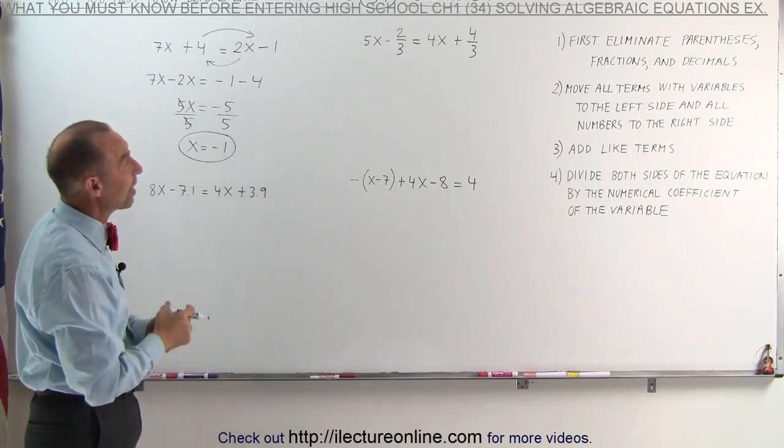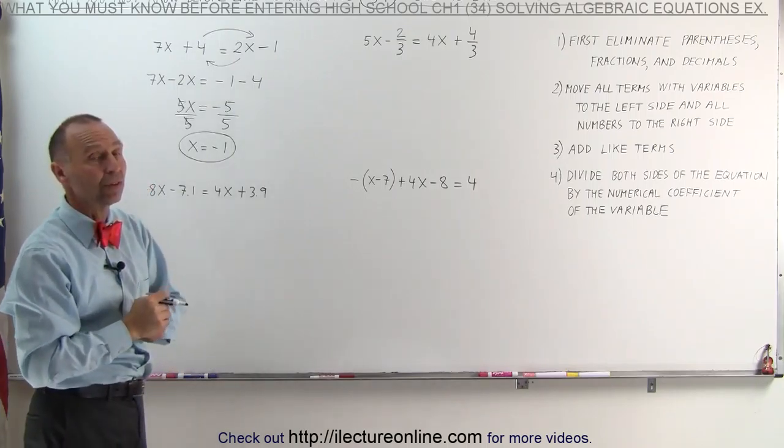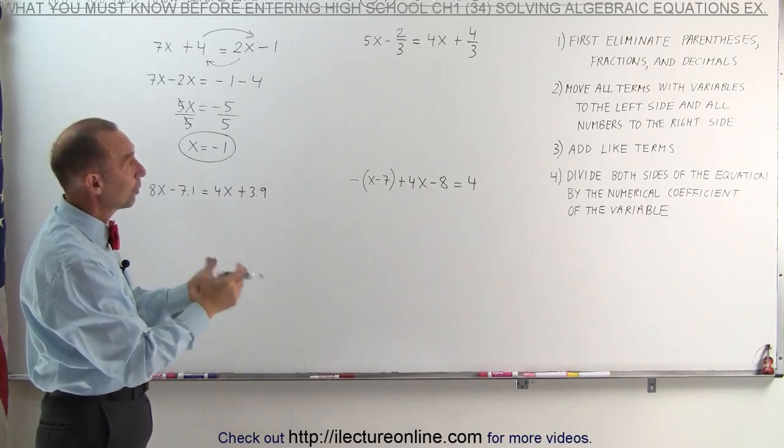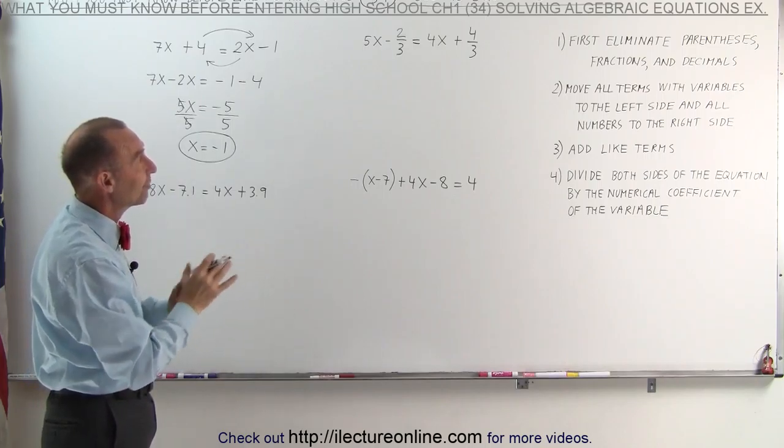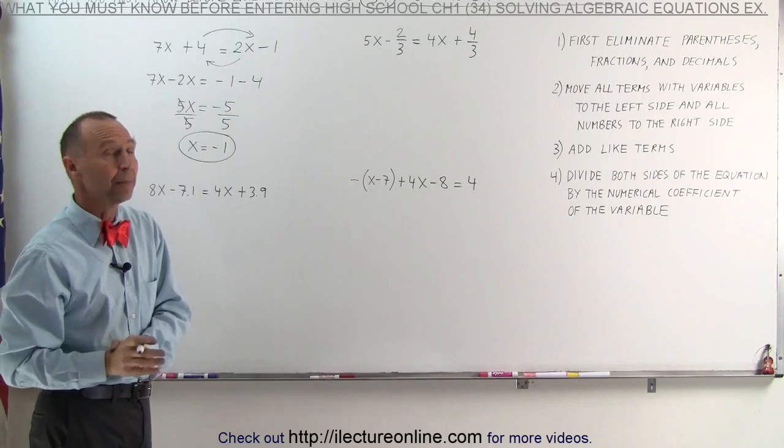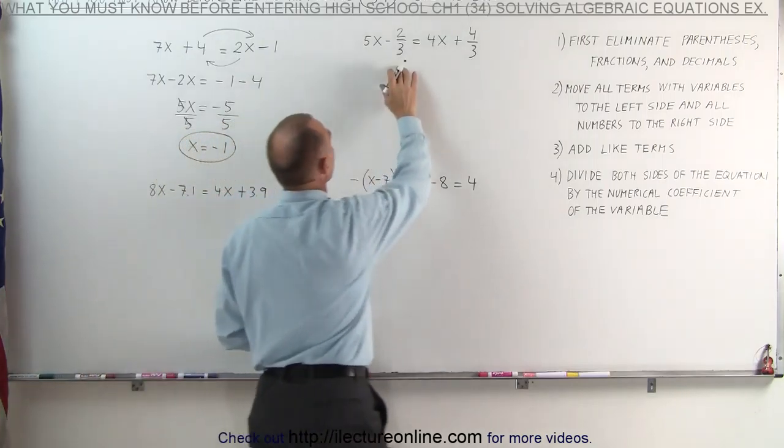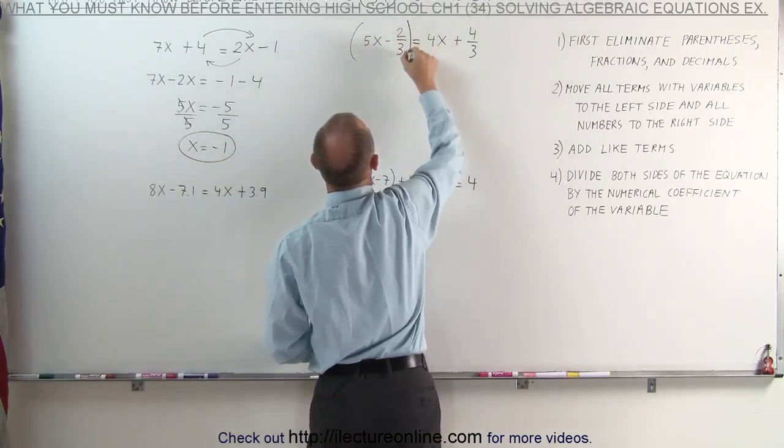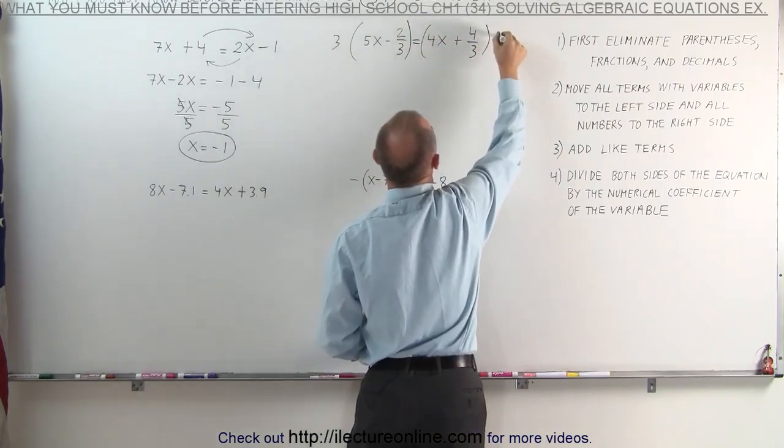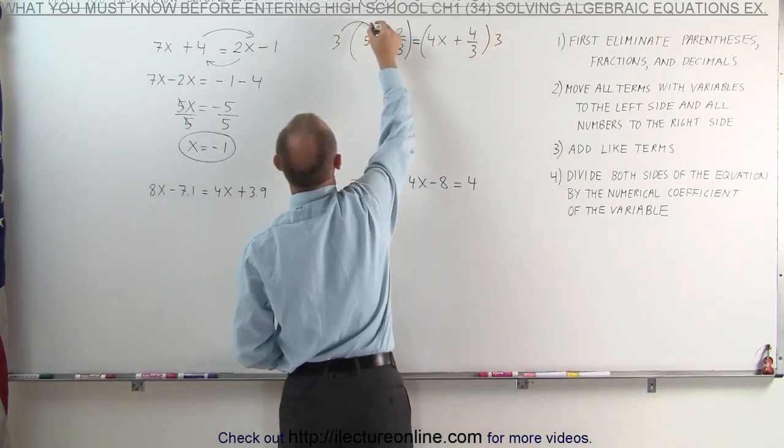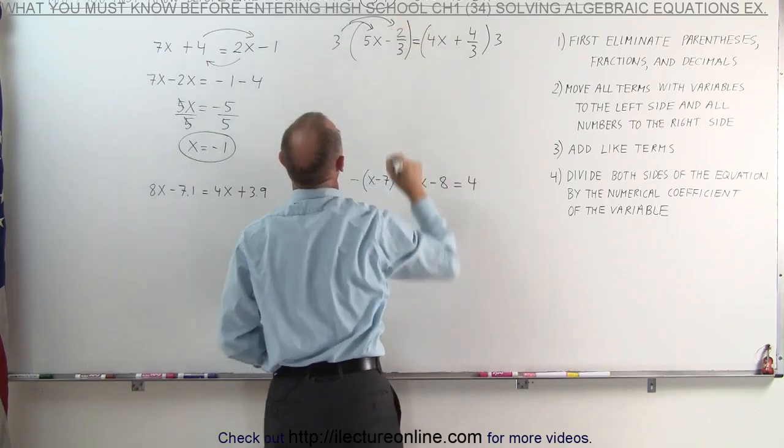On the second example, we have fractions. The first thing we want to do is get rid of the fractions. Notice we can do that by multiplying both sides of the equation by the lowest common denominator, which in this case is the number 3. Multiply the left side by 3 and multiply the right side by 3. When we distribute the 3 on both terms inside the parentheses...